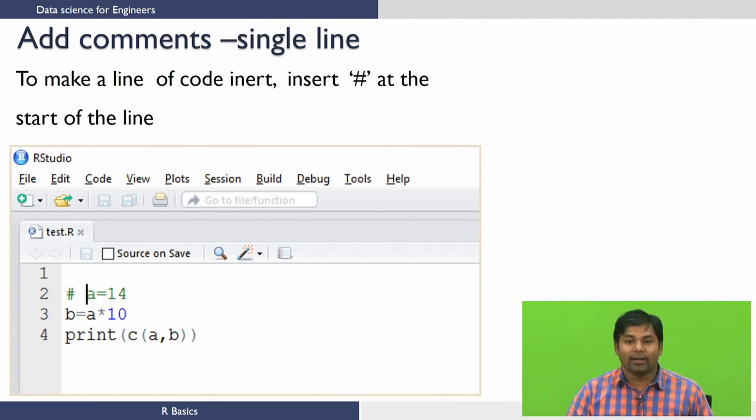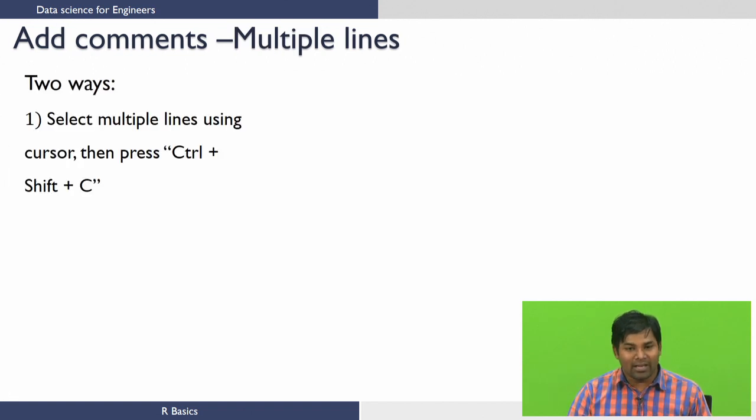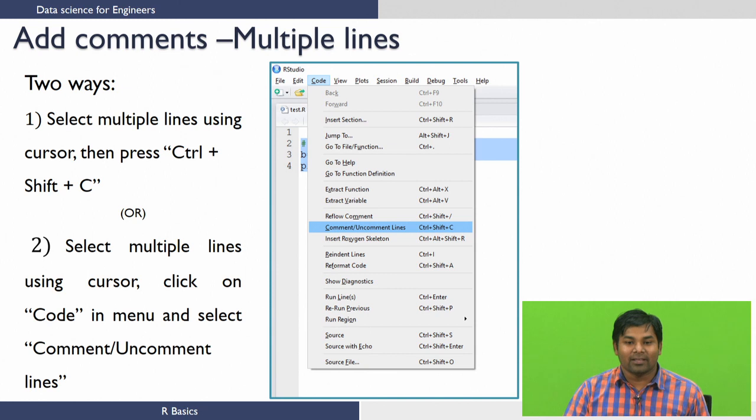Now we will see how to add comments to multiple lines at once in R. There are two ways. The first way is to select the multiple lines you want to comment using the cursor, and then use the key combination Control + Shift + C to comment or uncomment the selected lines. The other way is to use the GUI. Select the lines you want to comment using the cursor, and in the Code menu, if you click on the code menu, a pop-up window pops out in which you need to select 'comment or uncomment lines', which appropriately comments or uncomments the lines you have selected.